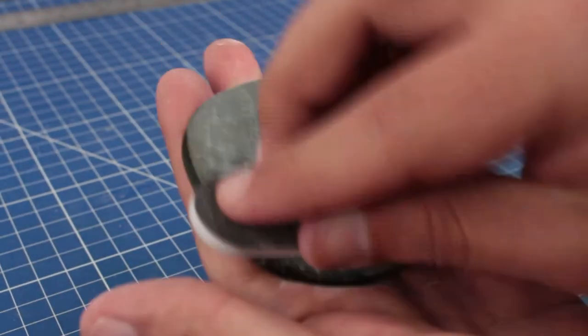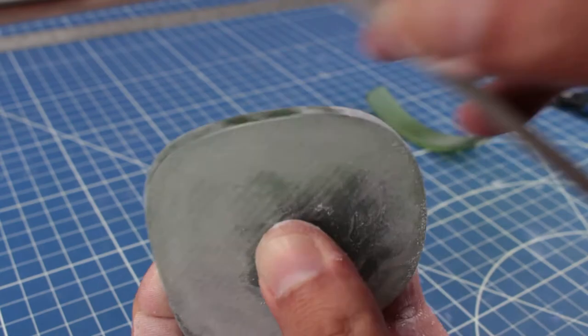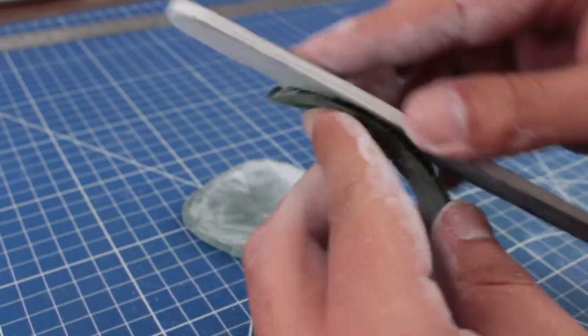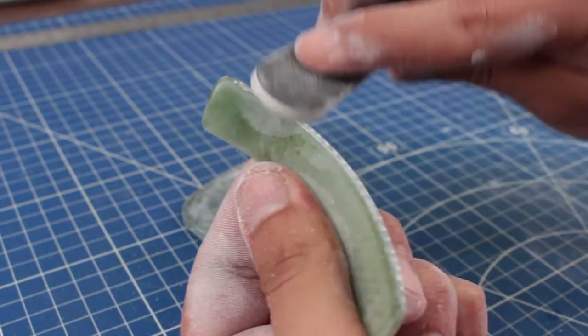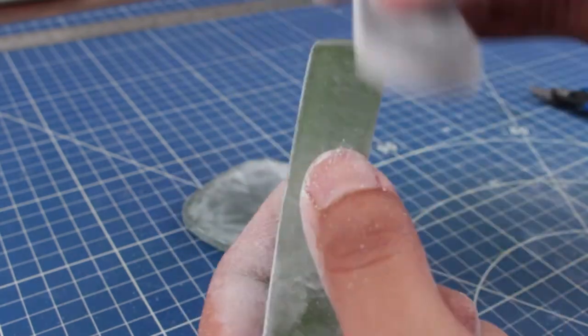And I use the same nail file to sand these two parts. Resin 3D printed parts are super easy to sand. And it took me about 10 minutes of sanding.